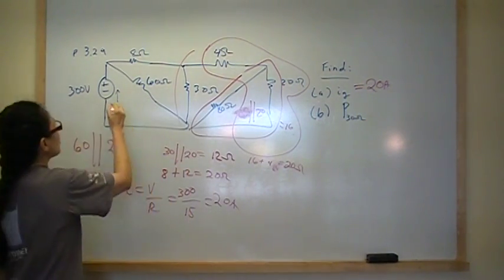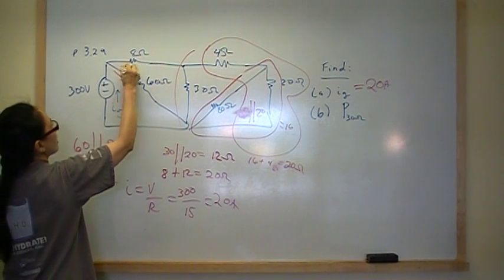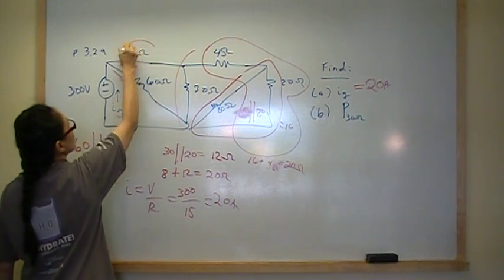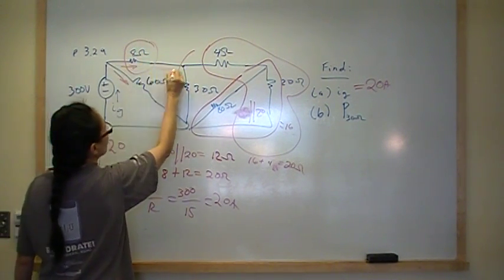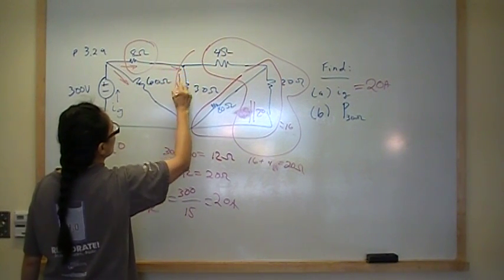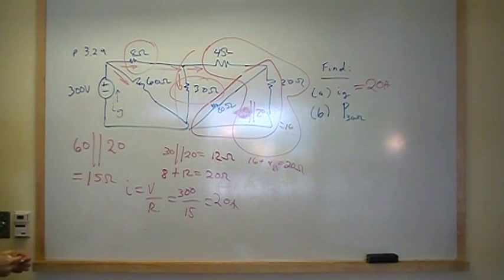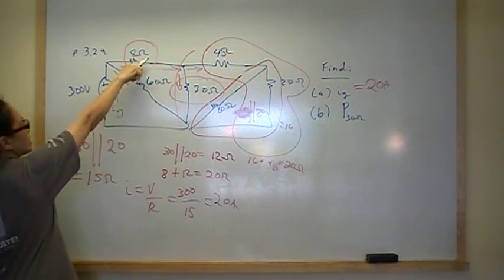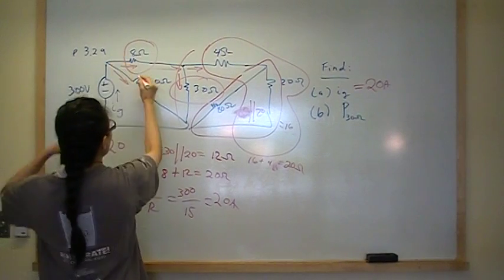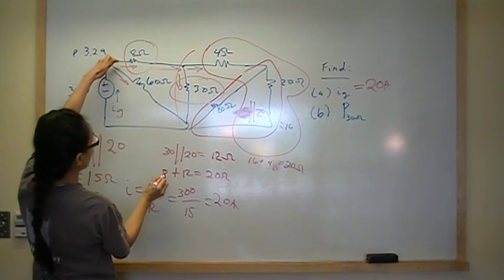So we know 20 amps is entering here, and it will break up and go like that. We need to find this right here, this I that goes through here, because this is the I that's going to split up and go in this direction, and we need this I in order to calculate the power. So what's the amount that's going there?